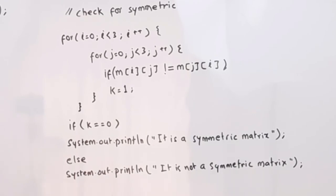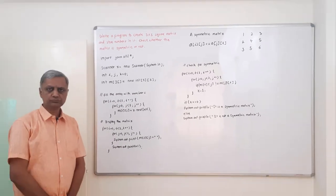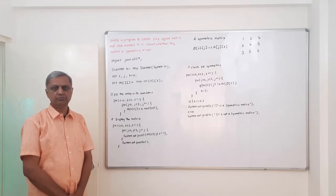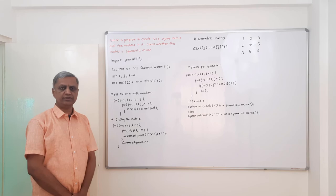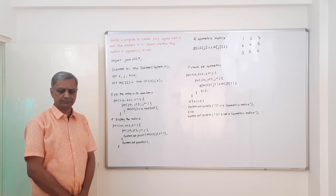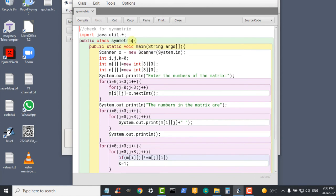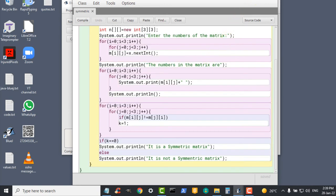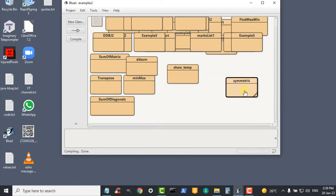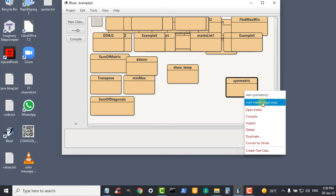So it is a simple program. We will run this program in the BlueJ's compiler and see how it works. We will also find this program in the comments box. So this is the program. Let us now check the program. Class save, compile, right-click on the programs icon and select void main string arguments.